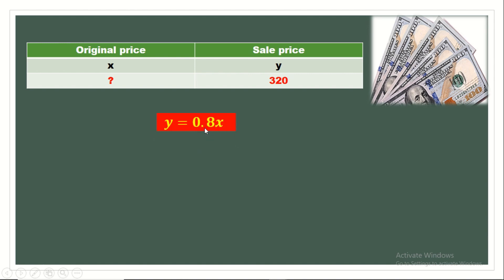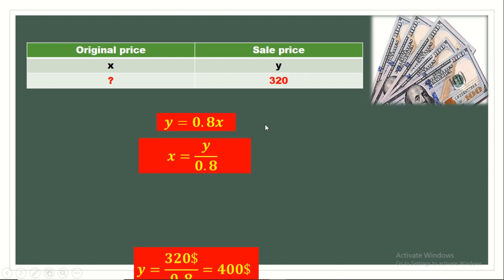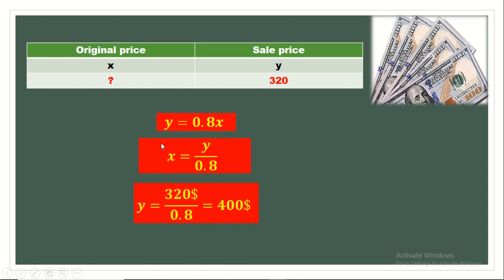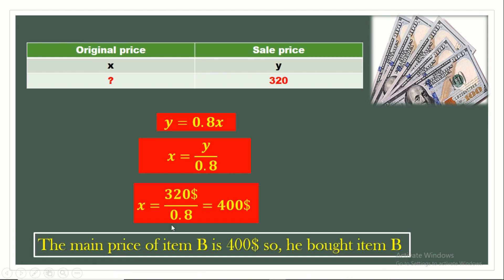To find X, we move 0.8 to the other side — times becomes divided by. X equals $320 divided by 0.8, which is $400. Looking at the table, item B has the price $400. So the customer bought item B.